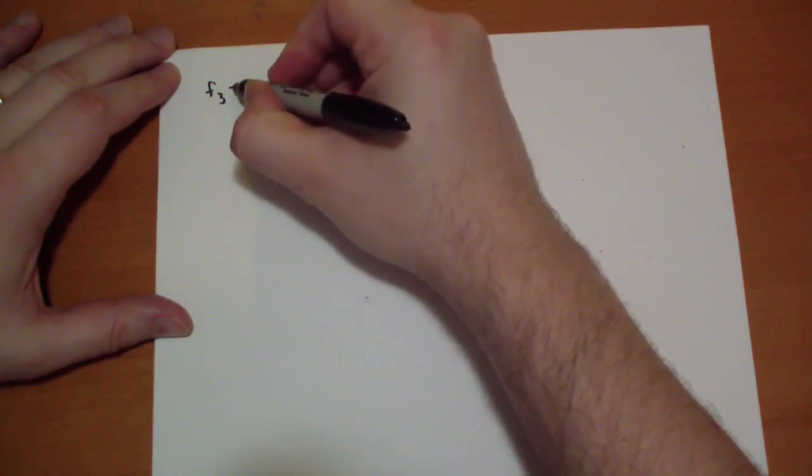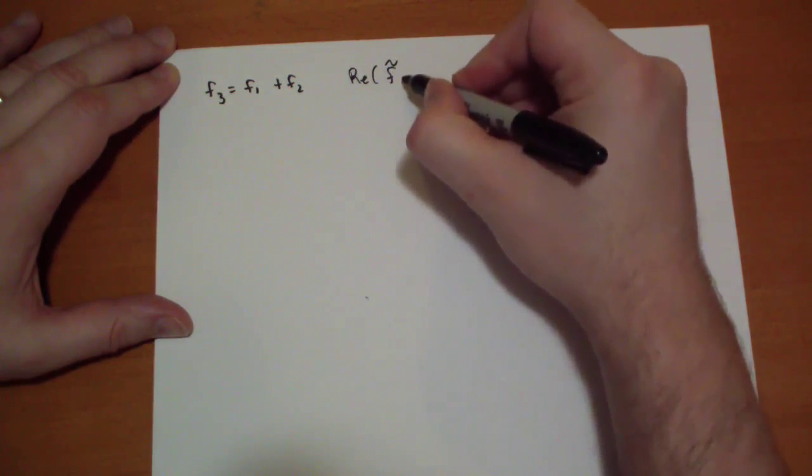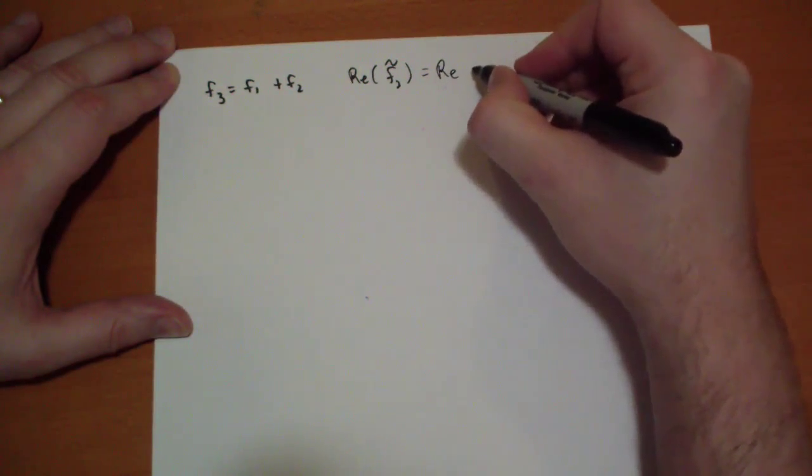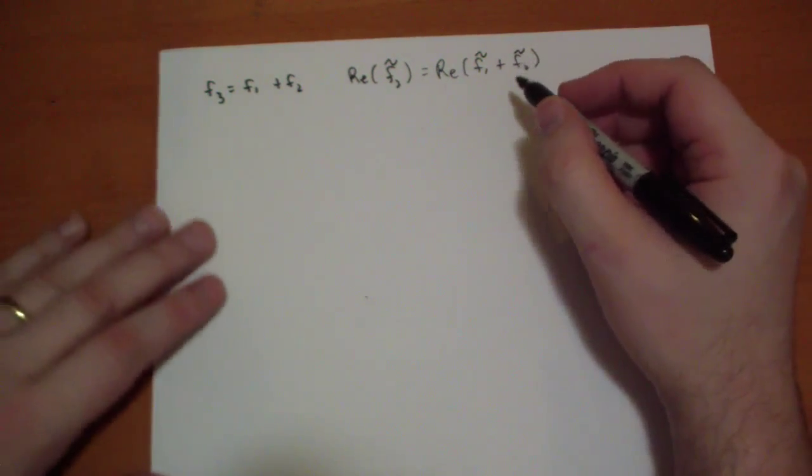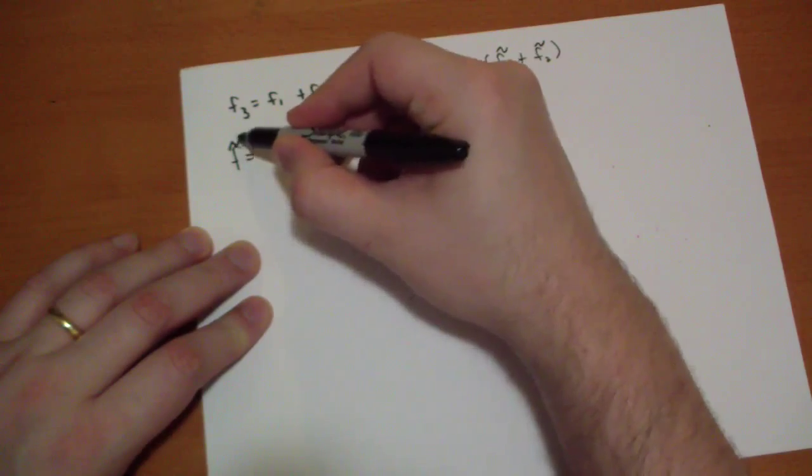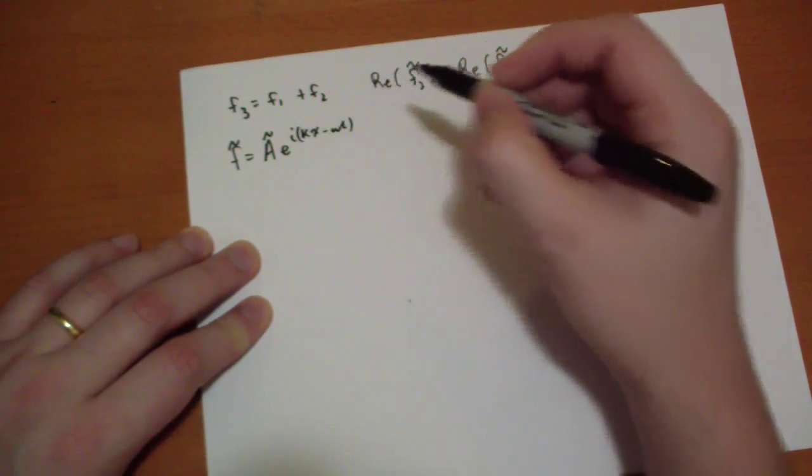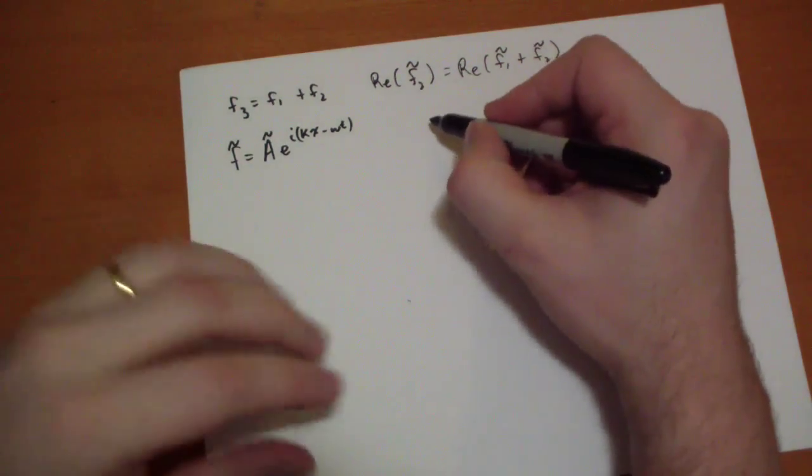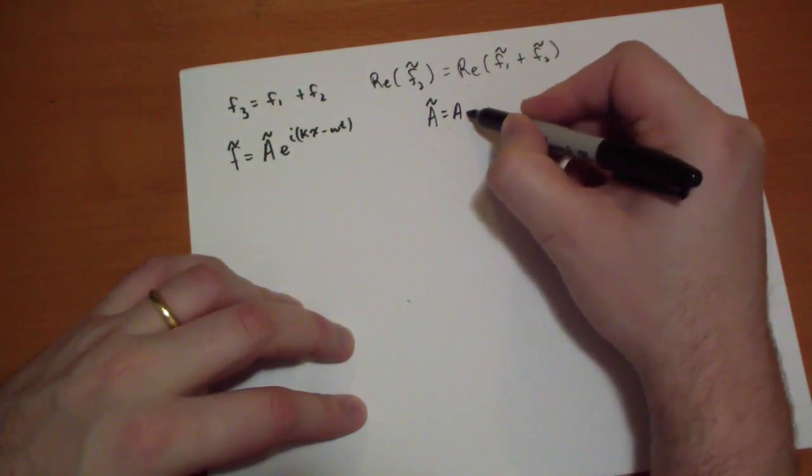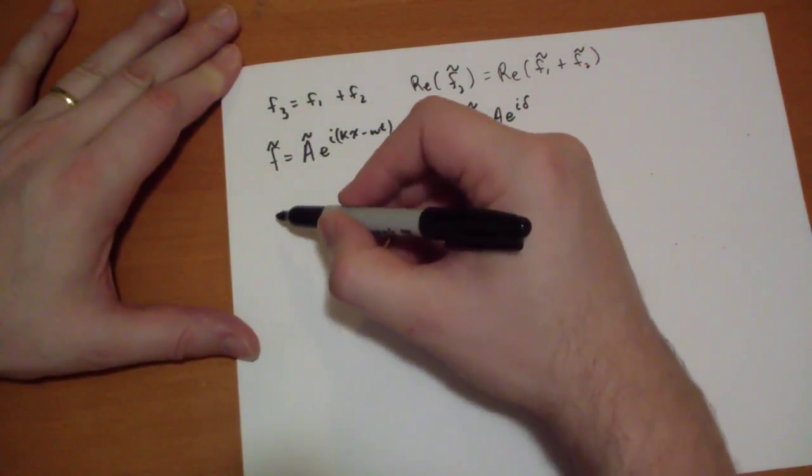If we switch to using complex notation, all of that geometrical interpretation falls right out right away. So in the complex notation we're going to say F3 is equal to F1 plus F2, which is the same as saying the real of the complex F3 is equal to the real of the complex F1 plus F2. What's the complex F? The complex F is equal to the complex amplitude times e to the i KX minus omega T, and remember the phase constant is absorbed into this complex number right there.